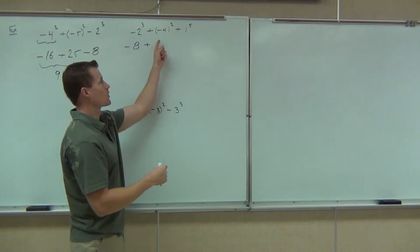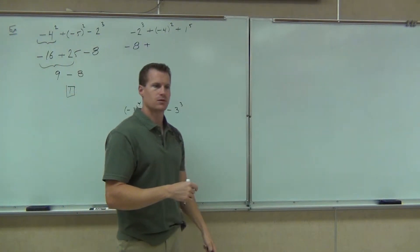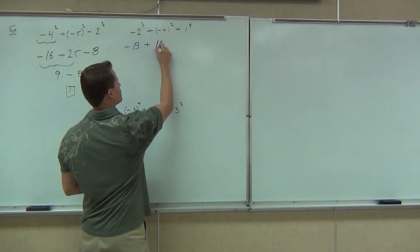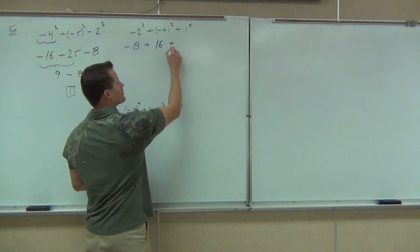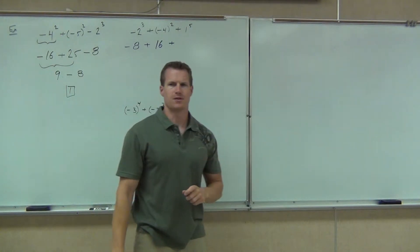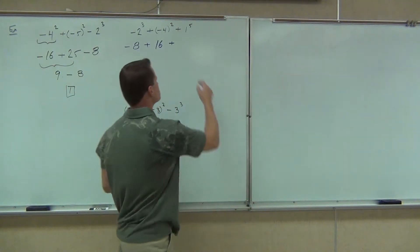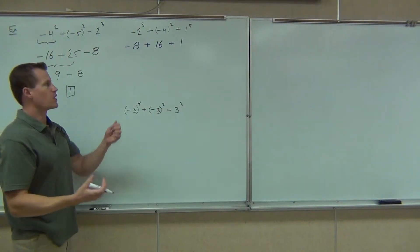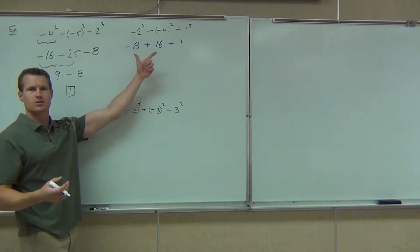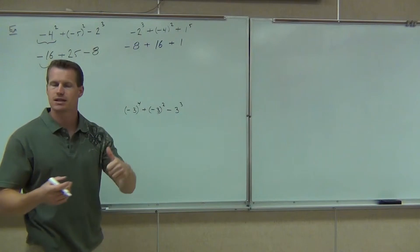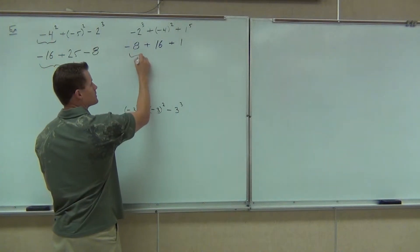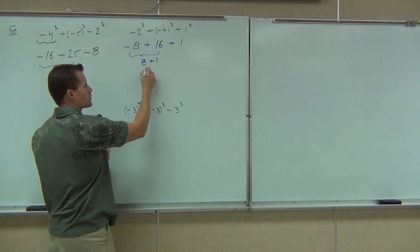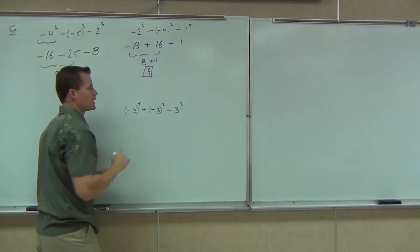So on our answer here, are we going to get a positive or a negative? Positive. Definitely positive — how much? 16. And then plus 1 to the 5th — what's 1 to the 5th? 1. That's kind of a nice one. Now we're down to the addition and subtraction from left to right. We're going to do negative 8 plus 16. Those have different signs, so you'll be subtracting, keeping the sign of the bigger number. That gives you 8 plus 1 equals 9.